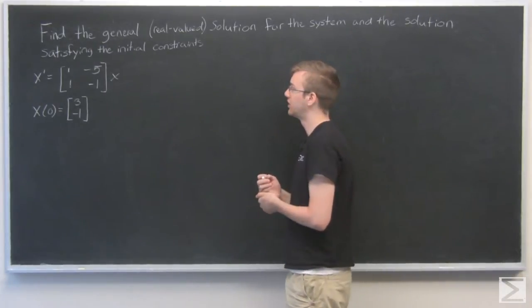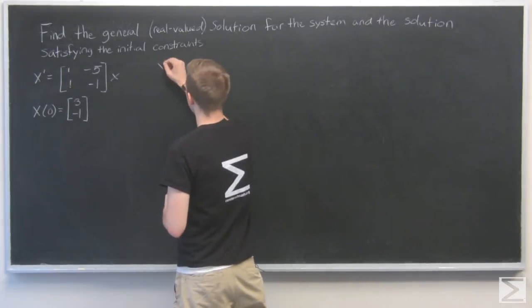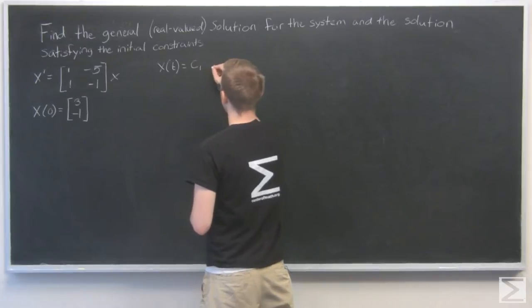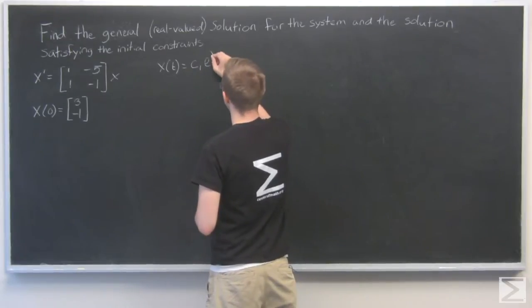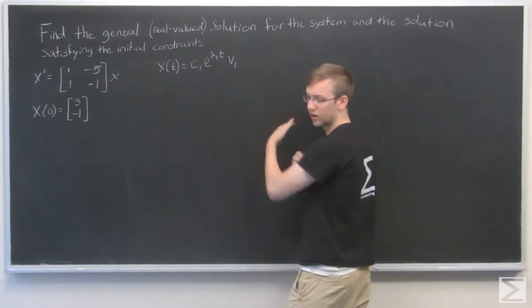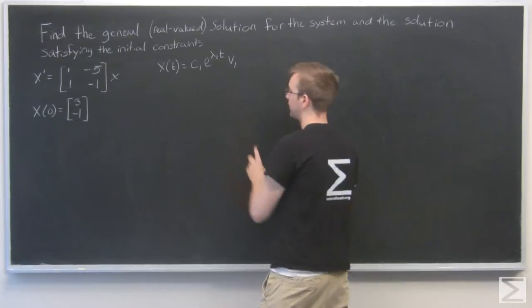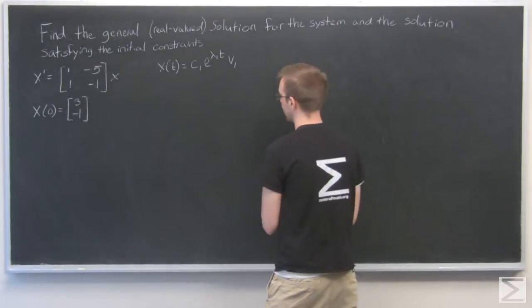So let's start. We know when we find the eigenvalues and the eigenvectors, we get a general solution that looks something like this, where x(t) equals c1*e^(lambda1*t)*v1, and so on. So we're going to first find eigenvalues and eigenvectors and try to get something like that.